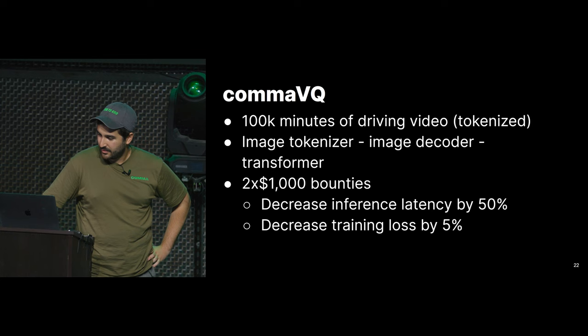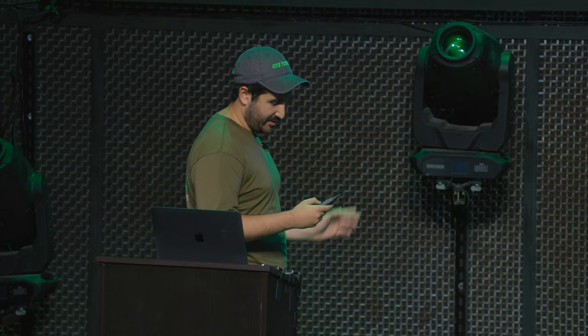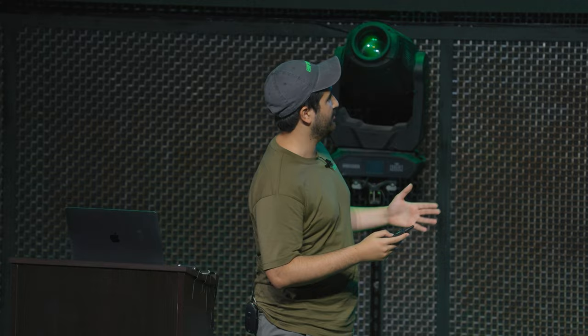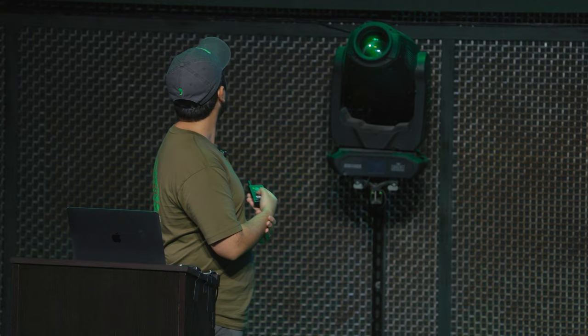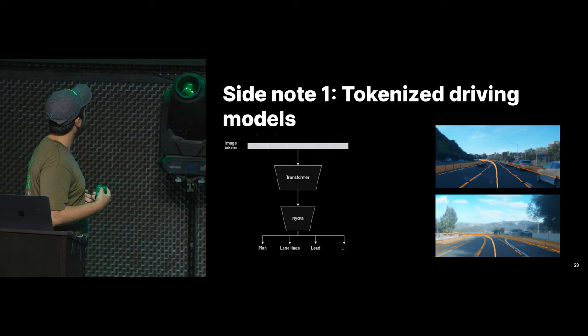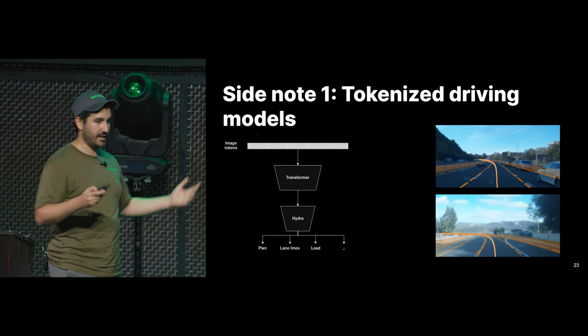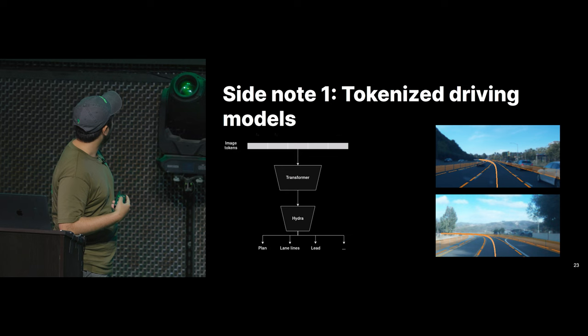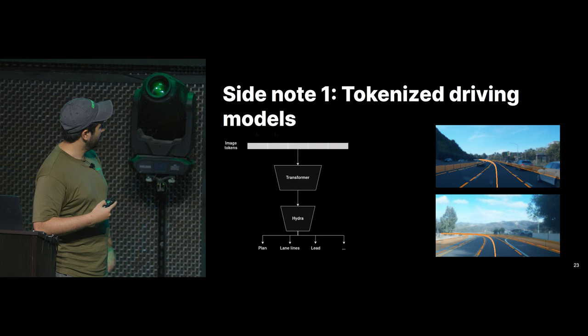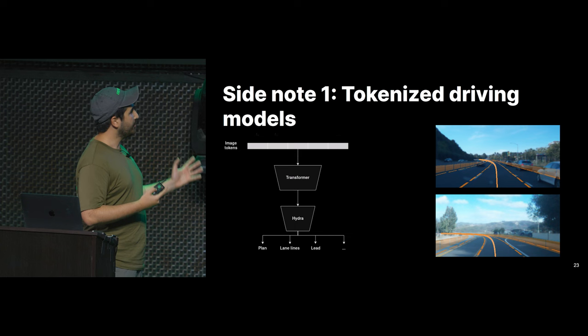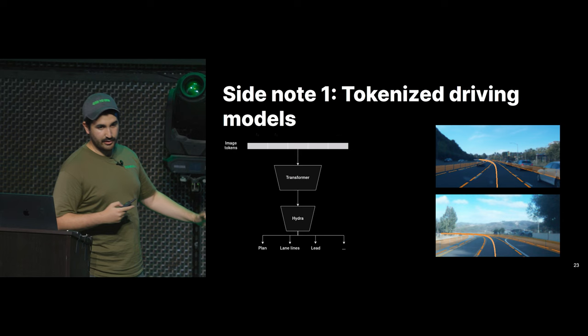In order to train a driving model, we actually don't need to go back to image space. You can train the model directly on tokens, since these tokens have everything you need to know to drive. Instead of a convolutional neural network that takes in an image and predicts the plan and lane lines, now we have a transformer, and you get the plan and lane lines from that. As you can see, it predicts lane lines and a reasonable plan — we don't technically need to go back to vision space.